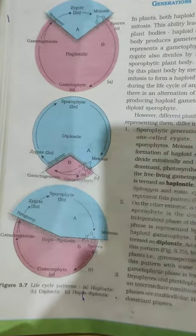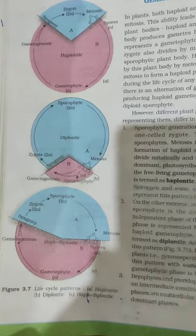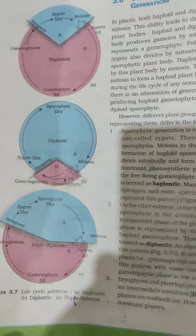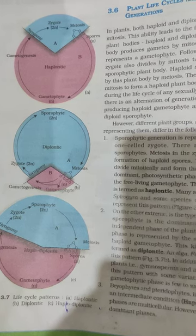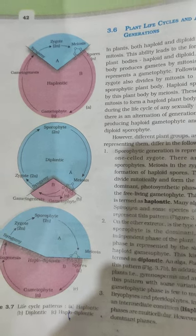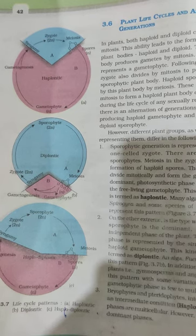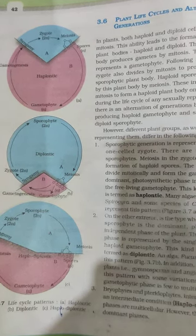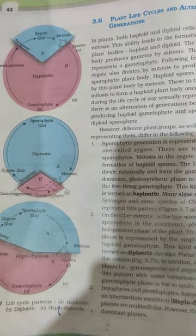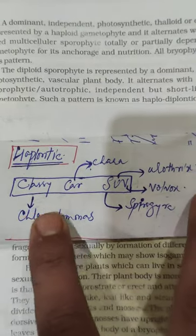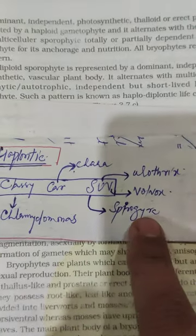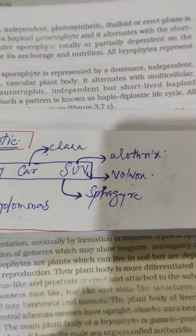Next is the topic of plant life cycle and alteration of generation. There are three life cycle patterns: haplontic, diplontic and haplodiplontic. Examples showing haplontic life cycle can be remembered by the trick 'Classy Car SUV': Chlamydomonas, Chara, Spirogyra, Ulothrix and Volvox.